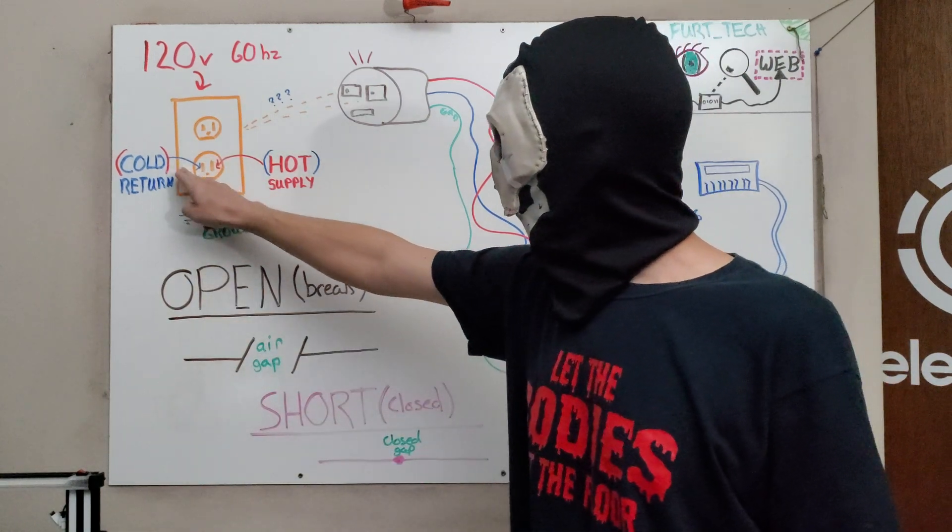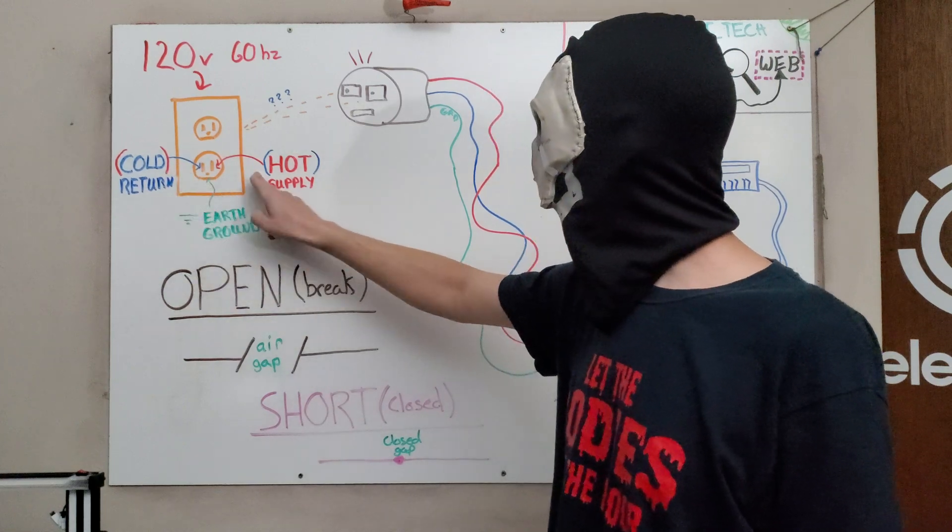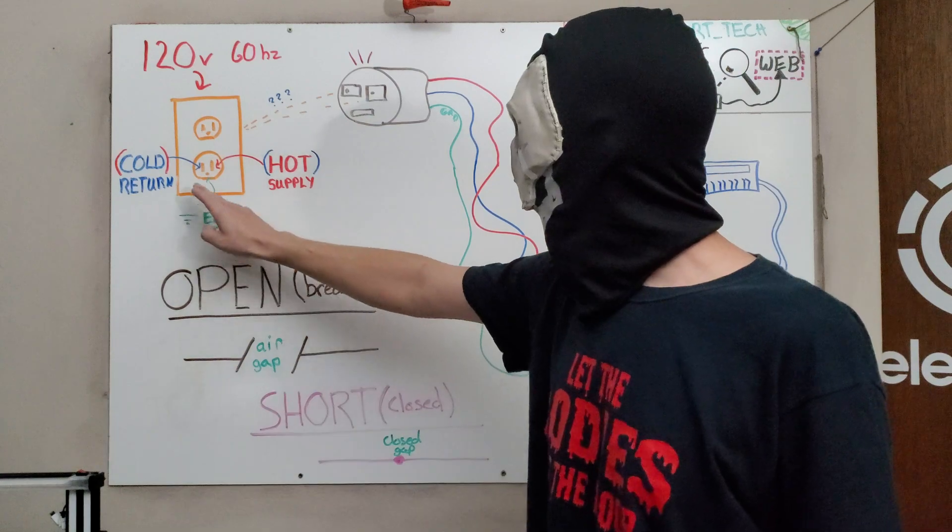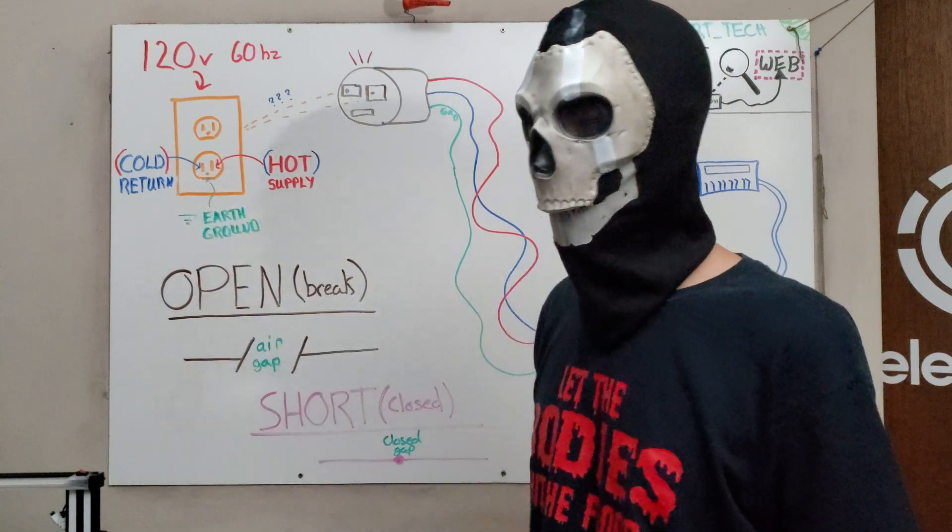Now, your common U.S. outlet has a cold, which is the return, your hot, which is the supply. That's the direction of current movement. And then we've got an earth ground, kind of important later on.